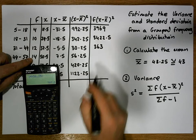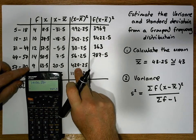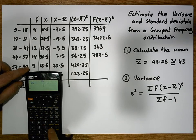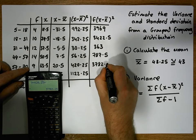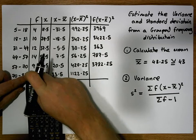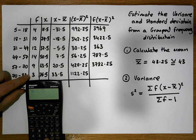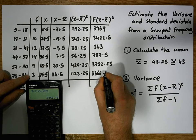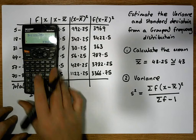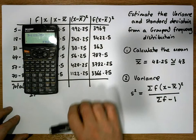The next value is 9 times 420.25, giving us a value of 3782.25. The next value is 3 times 1122.25, giving us a value of 3366.75. Now that we have all the f times (x minus x̄) squared values calculated for each observation, we sum up this column.